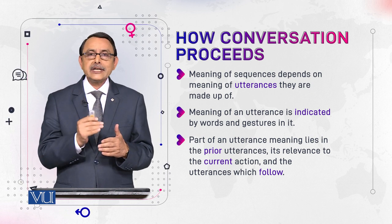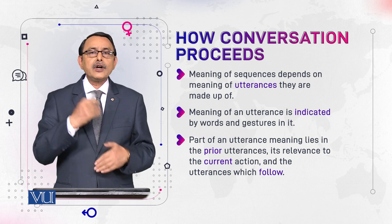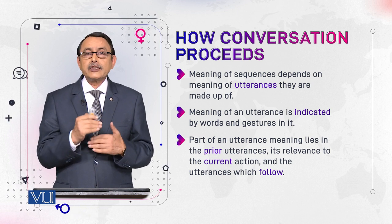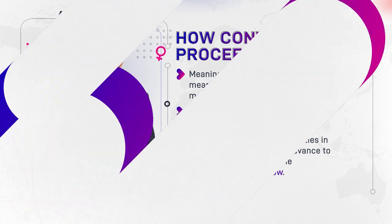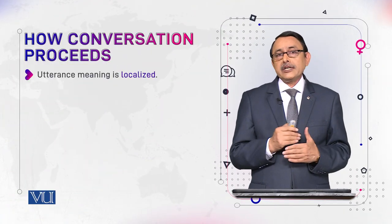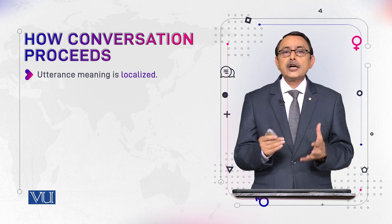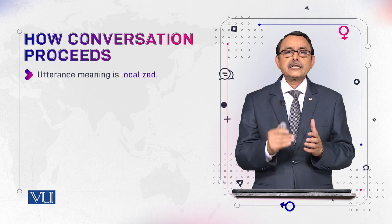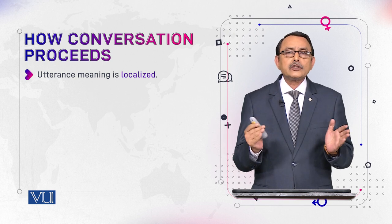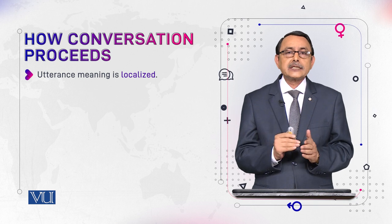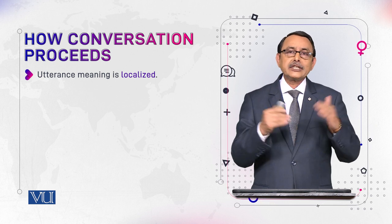When we try to understand an utterance's meaning, we relate it to utterances that went before and possible utterances that will follow it. Every utterance is in this way interwoven and interconnected with preceding and following utterances. Utterance meaning is therefore localized — the meaning comes from inside the utterances with which it is related. This meaning does not come from outside the conversation. In conversation analysis, we talk about internal context, never external context that lies outside the conversation.